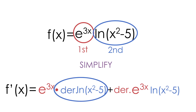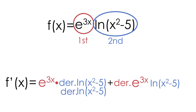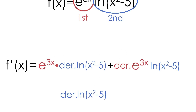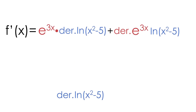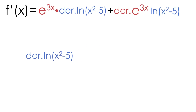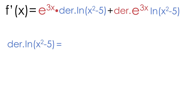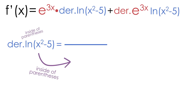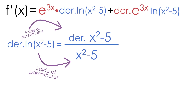Let's start on the left and simplify the derivative of the natural log of x squared minus 5. If you're not familiar with taking the derivative of a natural log, the idea is really simple. The only thing we have to do is create a fraction. In the bottom of the fraction, we'll put the inside of the parentheses, x squared minus 5. And in the top of the fraction, we're going to take the derivative of the inside of the parentheses, x squared minus 5.